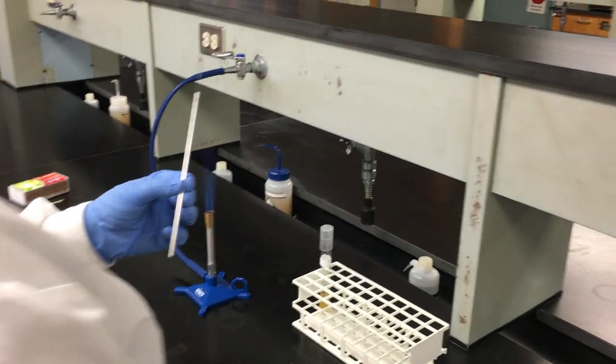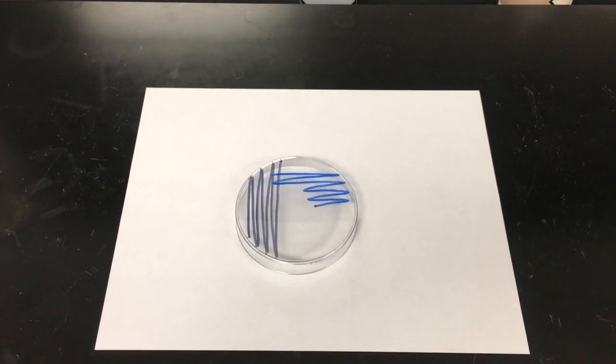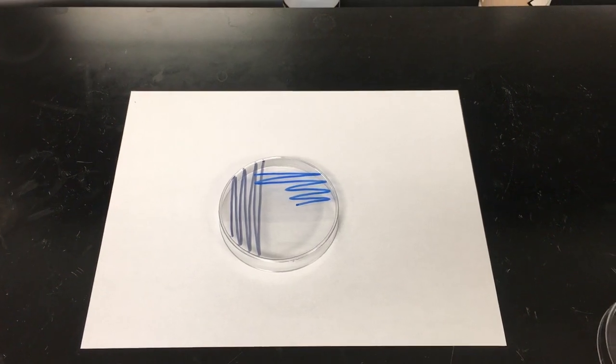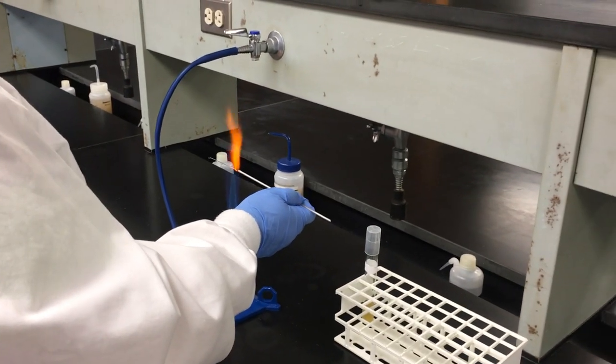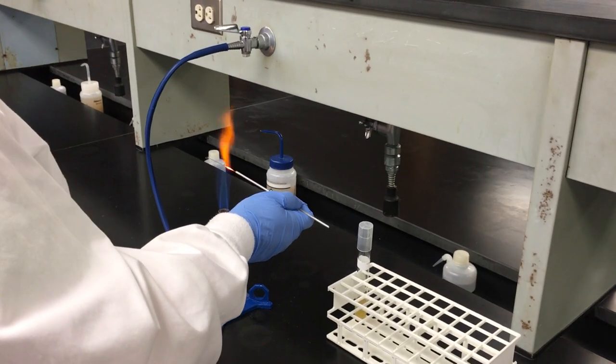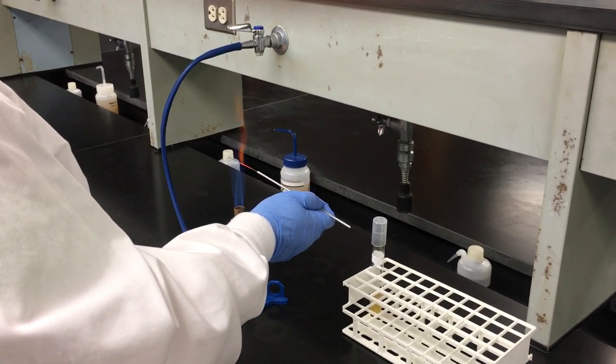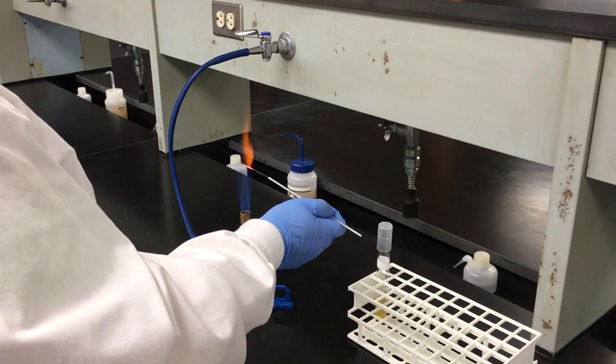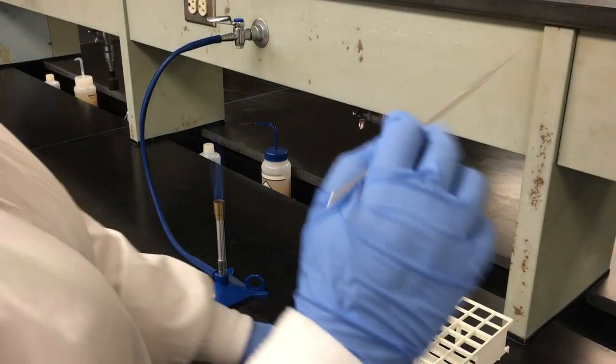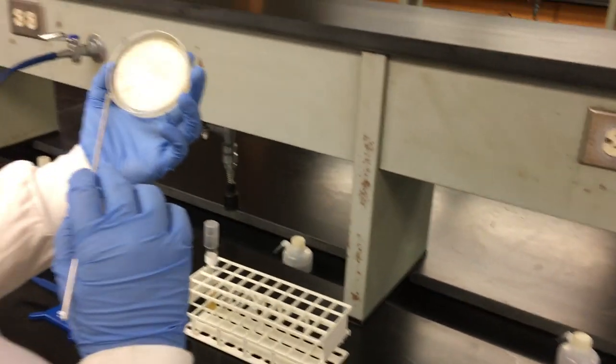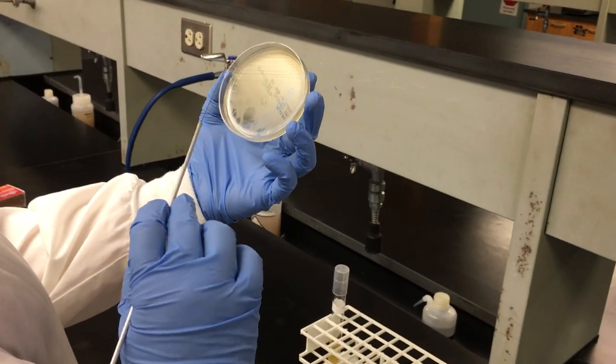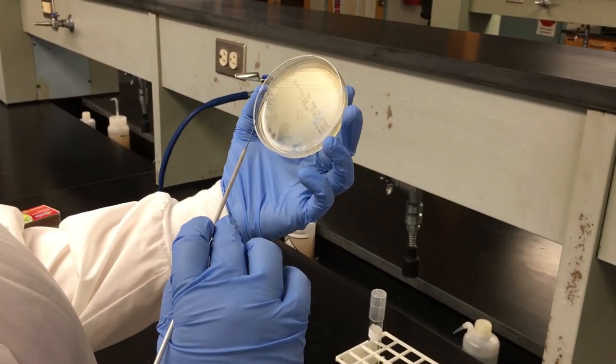You will then, once again, sterilize your loop, handle till tip, allow it to cool, go back to the same area that you originally cooled it in, back and forth until the sizzling sound is gone.